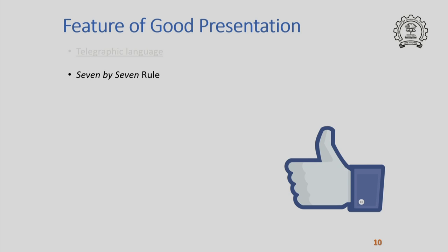There is also a very popular rule called the 7 by 7 rule for PowerPoint presentations. The rule states that you should try to put all information in a maximum of 7 sentences or points, and each point should have a maximum of 7 words. Anything more than this can lead to loss of information or loss of attention.